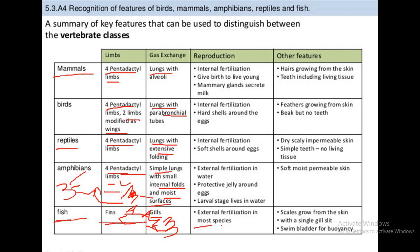In fishes, reproduction involves external fertilization. They release jelly-like eggs in water, and sperm is also released over the eggs outside the body — fertilization takes place outside the body. In amphibians, fertilization is also external. Their eggs are jelly-like and get fertilized outside the body. The larval stage — the tadpole stage — is found in water.